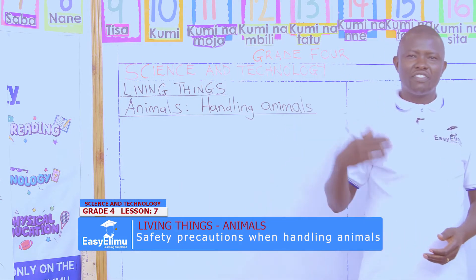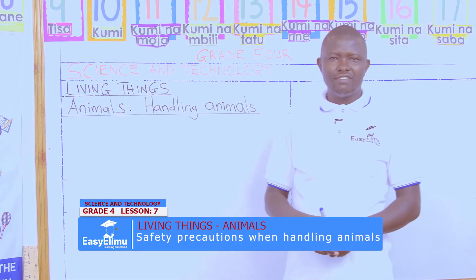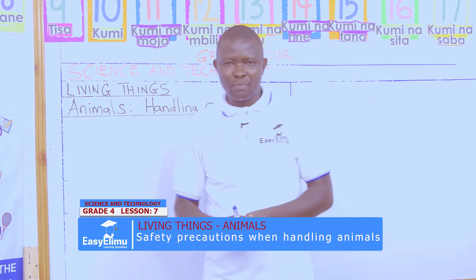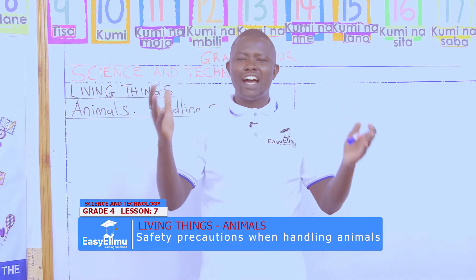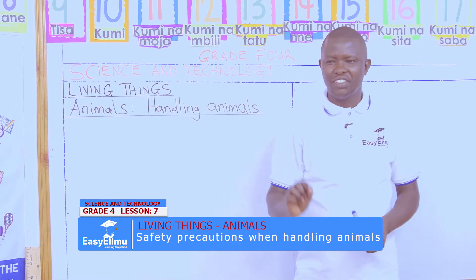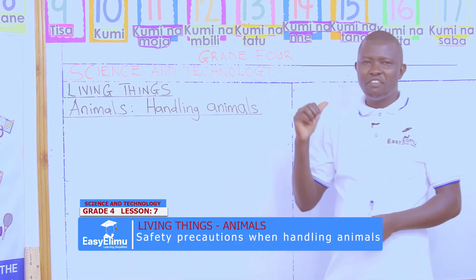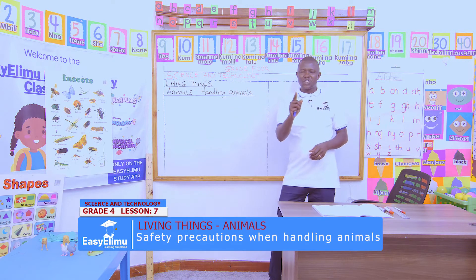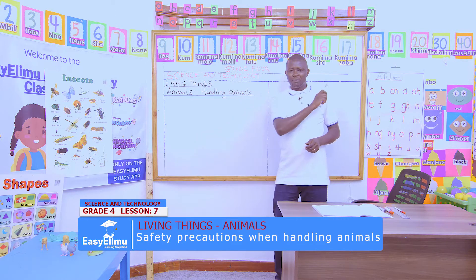In our previous lesson, we learned about vertebrates and invertebrates. Can you remind us what we said? Jane said vertebrates are animals with backbone — that is correct. Tom has also said invertebrates are animals without backbone.